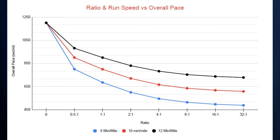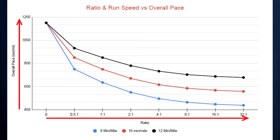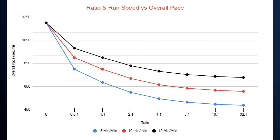Here's the chart. The horizontal axis is ratio — as you go right, ratio increases. The vertical axis is overall pace in seconds per mile. There are three curves for three different running speeds: the top black line is 12 minutes per mile, the middle red line is 10 minutes per mile, and the bottom blue line is 8 minutes per mile. Throughout this analysis I assume one walking speed of 20 minutes per mile. So for example, at a two-to-one ratio running at 8 minutes per mile, your overall pace is about 600 seconds per mile.